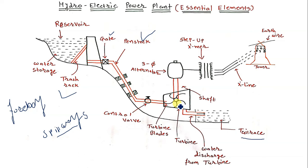Now let us discuss the catchment area. This is the geographical area that catches rainwater and is located behind the dam. We cannot easily show it in a figure because it extends very far from the hydroelectric power plant itself.